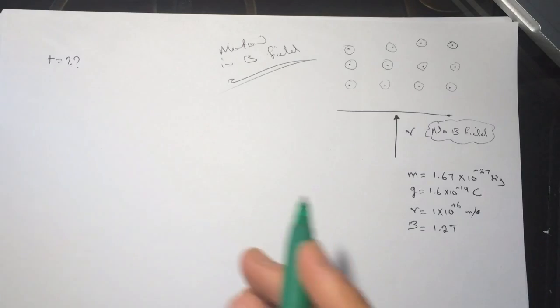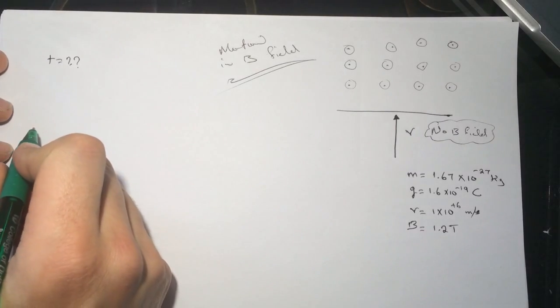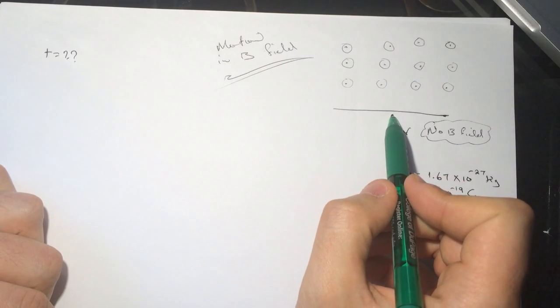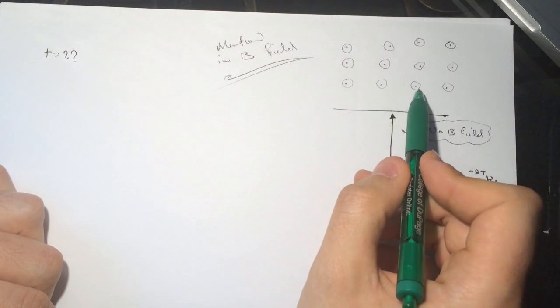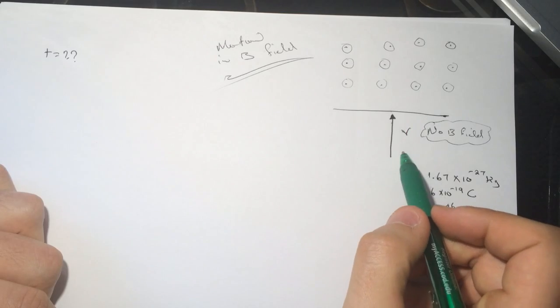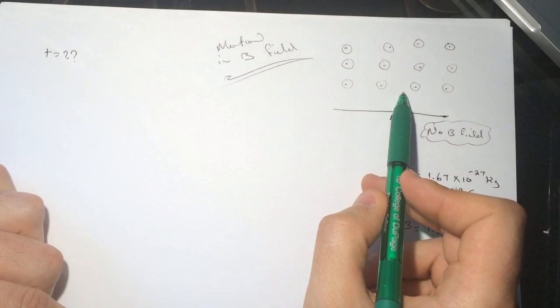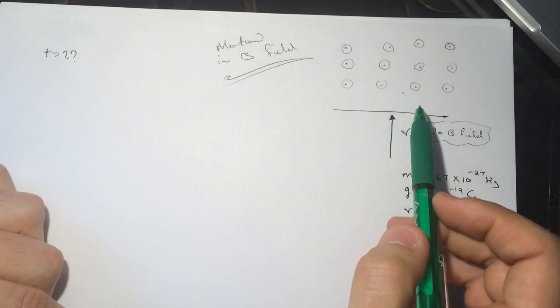...is motion in B field. So we have a positive particle that's entering a B field, a magnetic field. Here there was no B field, and there's a B field here. Since it's positive...